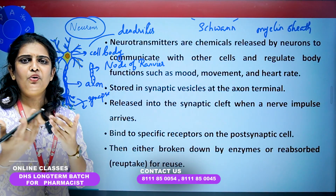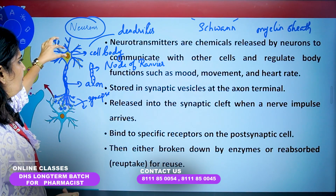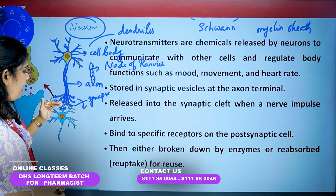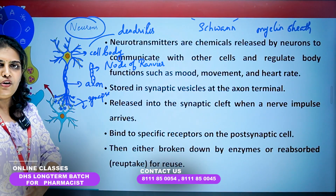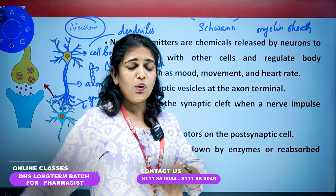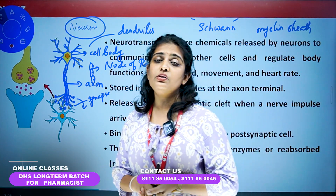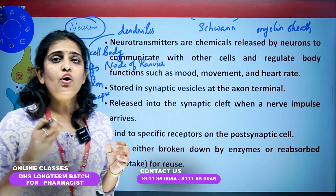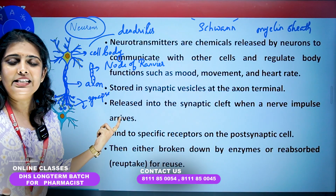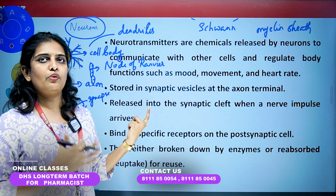We call them pre-synaptic neurons and post-synaptic neurons. The pre-synaptic neuron adds the axon to the end, and the next neuron has the cell body — it goes like that. Millions and trillions of neurons are present in our human body. With neurotransmitters, neurons release particular types of chemicals.